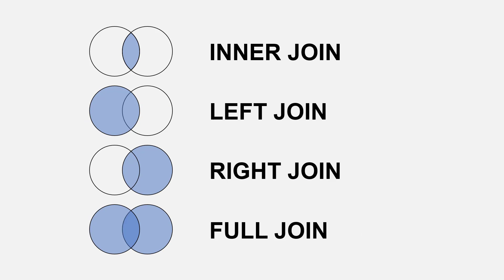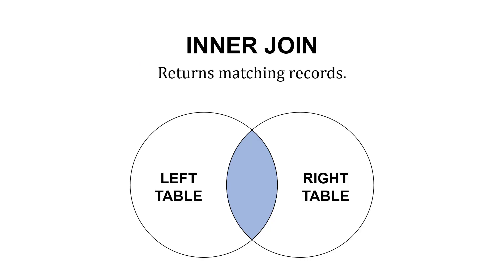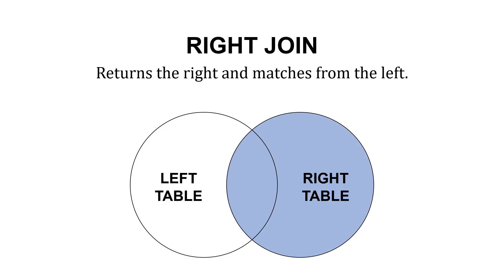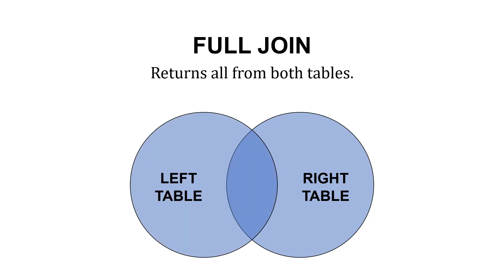There are four joins we're going to talk about: an inner join, left join, right join, and full join. At a high level, an inner join returns matching records between the two tables — just the overlap. A left join returns the left table and matches from the right where they overlap. A right join is the reverse — it returns the right table and matches from the left. And a full join brings everything from both tables.